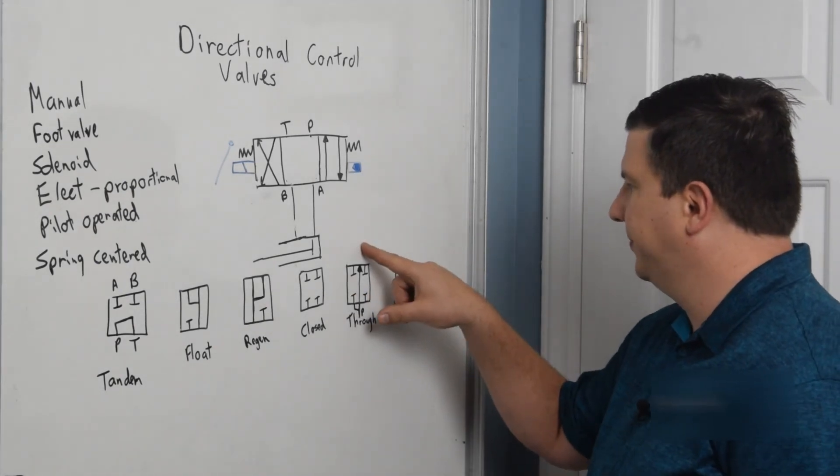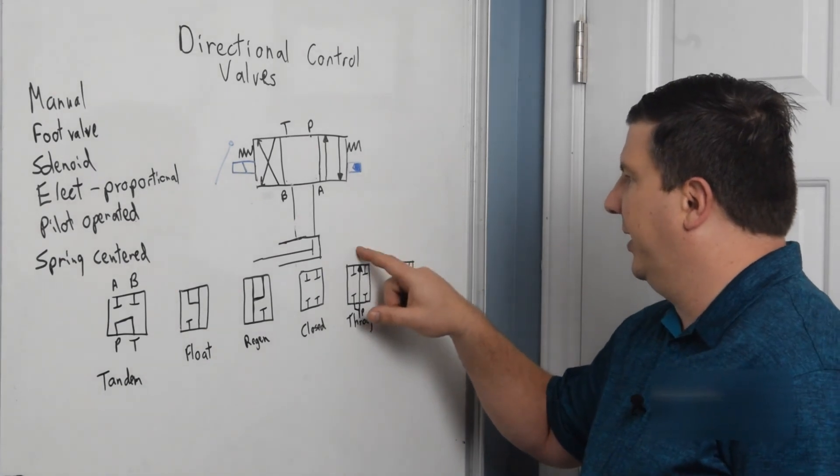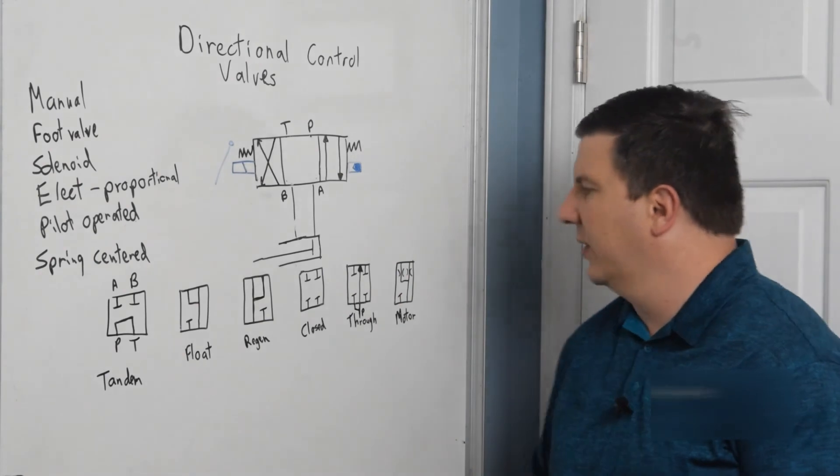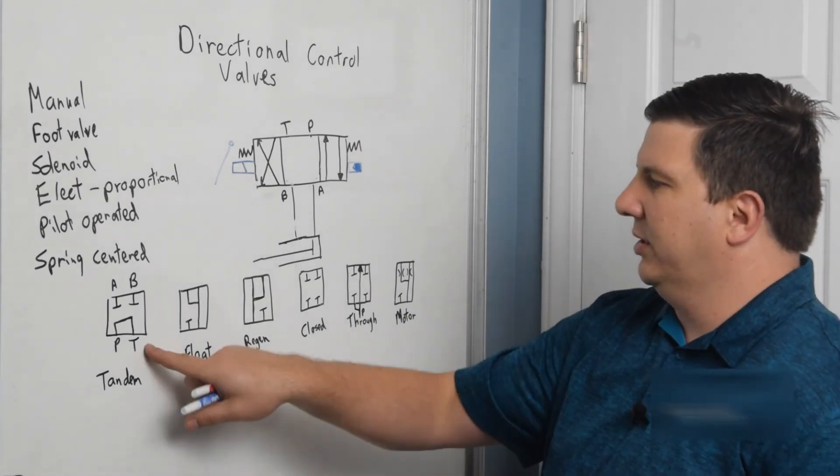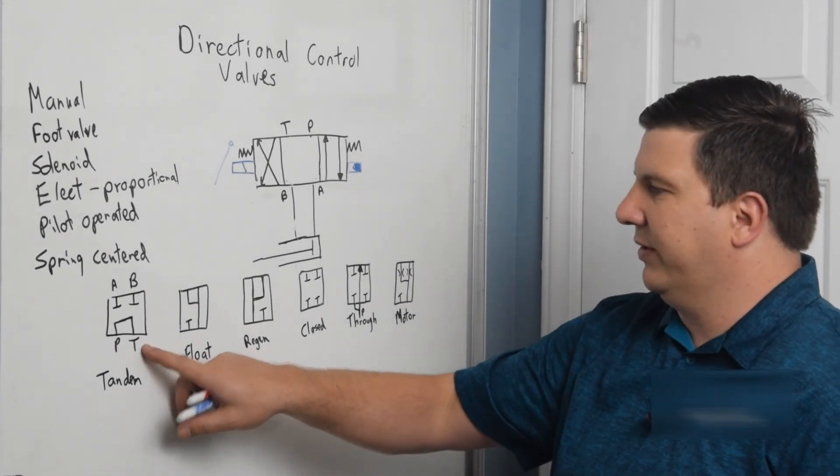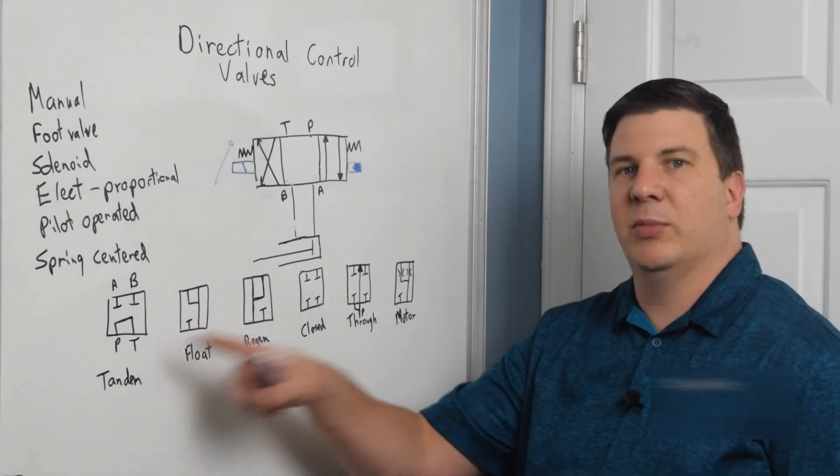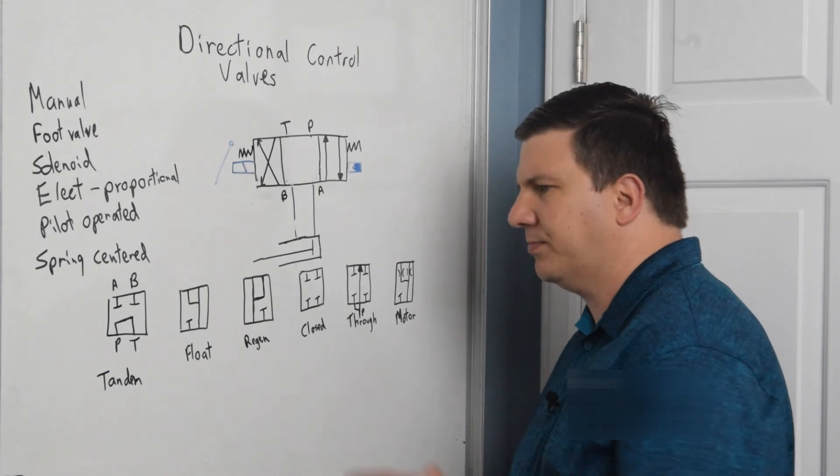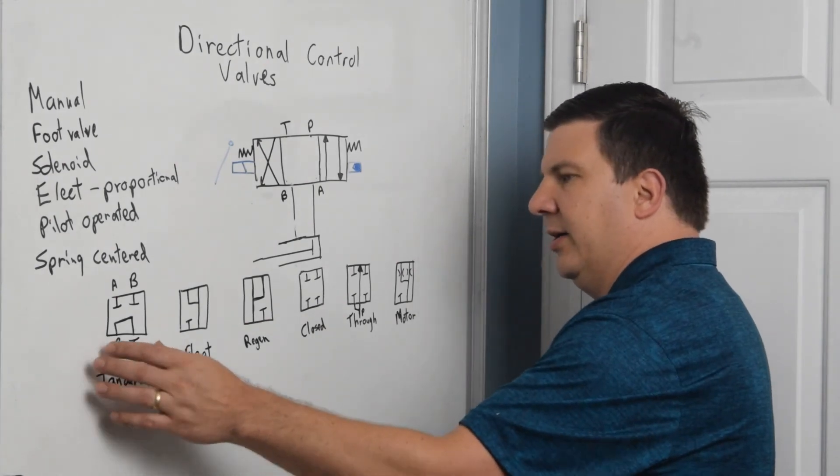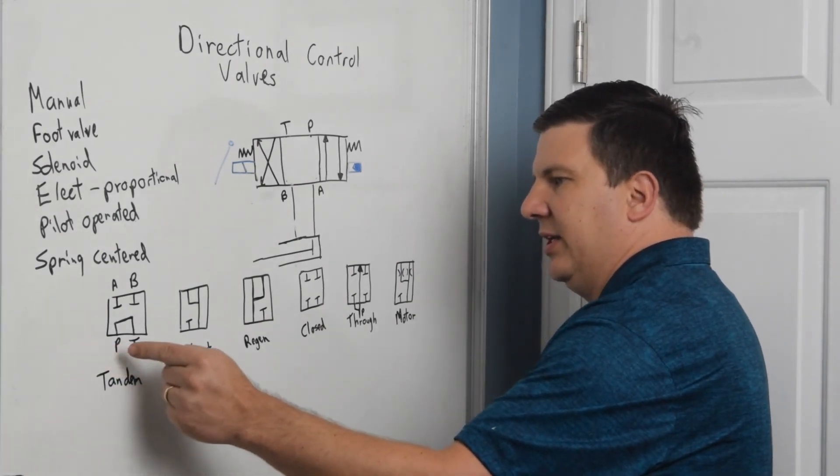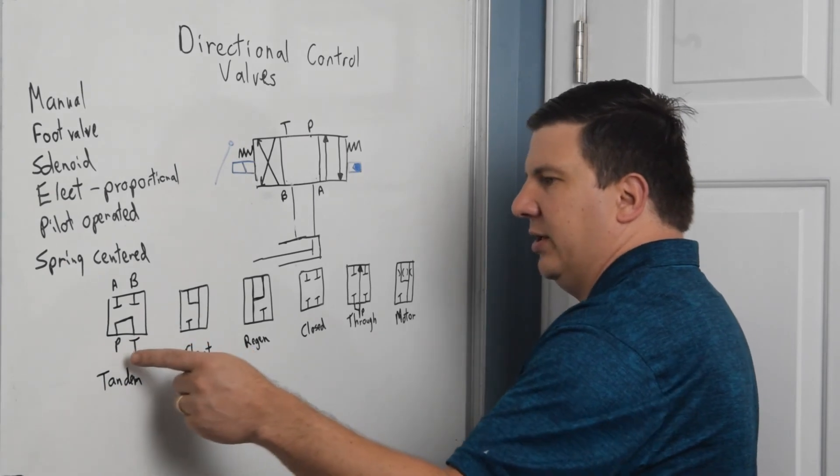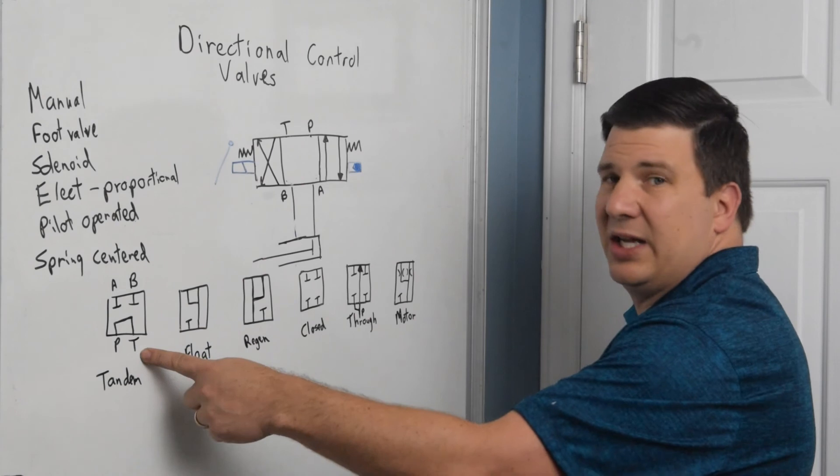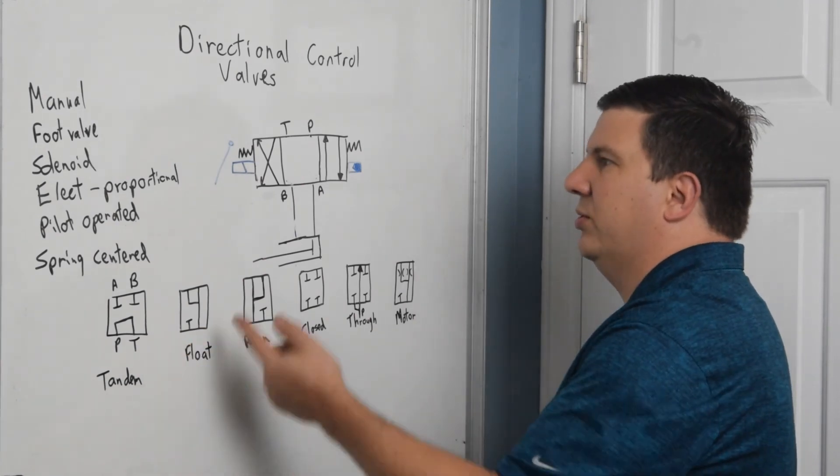And what happens is, is if everything is blocked off, my pressure goes through and I can power another valve downstream of it. If I don't do this or if I do this and have multiple valves, what happens is, if I don't have this one shifted, or if I do have this one shifted and I'm returning oil through the tank line, then I have the tank line plumbed into the next valve.